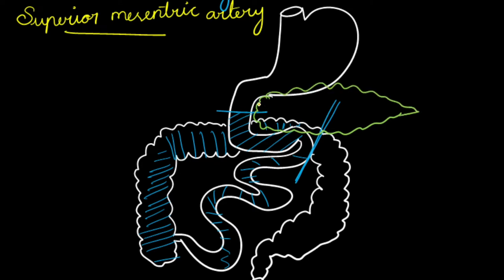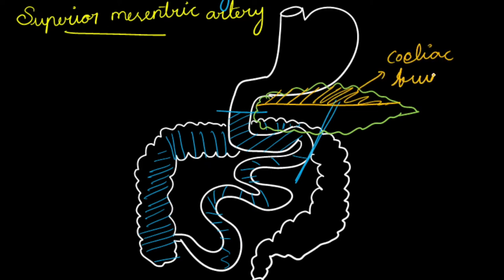In the previous video we saw that the upper part of the pancreas is supplied by the celiac trunk. Here, the lower part of the pancreas is also supplied by the superior mesenteric artery. This is all regarding the blood supply of the superior mesenteric artery.